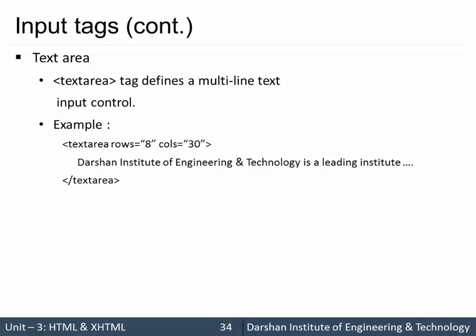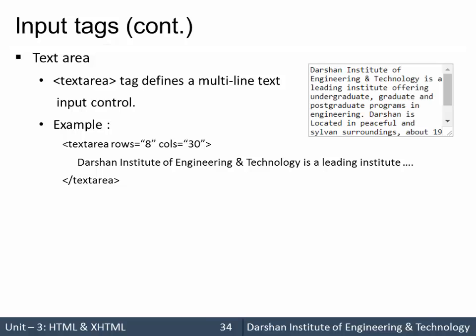It is not 'input type equal to textarea' — that is a common mistake students make. Instead, you have to write a separate tag named textarea. With the textarea tag you can specify the number of rows and columns using the attributes rows and cols. Whatever you write inside the textarea element will be displayed inside it — in our case, some text about research in engineering and technology. If you specify nothing, it will be blank and the user can write whatever they want.